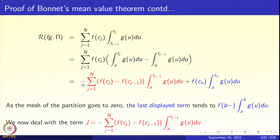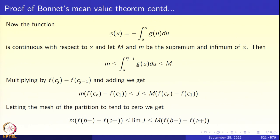Applying Abel's summation by parts, we pick up a minus sign: summation j from 1 to n of (f(c_j) minus f(c_{j-1})) times the integral from a to t_{j-1} of g(u) du, plus the last term shown in blue. As the mesh of the partition goes to 0, this last term goes to f(b−) times the integral from a to b of g(u) du. We then deal with the term in red: minus summation j from 1 to n of (f(c_j) minus f(c_{j-1})) times the integral from a to t_{j-1} of g(u) du.